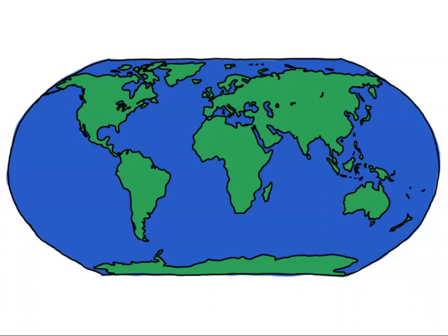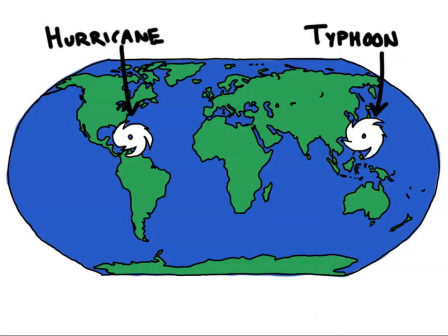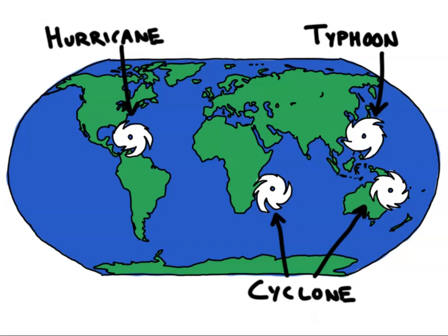This same kind of storm has different names around the world. In the Atlantic, they're called hurricanes, from the name of the Taino storm god Huracan. In East Asia, they're called typhoons, from the name of the Greek mythological monster Typhon. And in the Southern Hemisphere, they're called cyclones, from the Greek word kyklos, meaning circle. But they're all the same kind of storm, and I'll be using the word hurricane throughout this video.